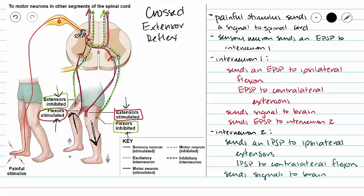This is going to continue until our brain gets those signals and can take over our movements. Now I want to outline the same reflex looking at our ipsilateral side versus our contralateral side. It's the exact same information, just a different way of outlining what's going on.